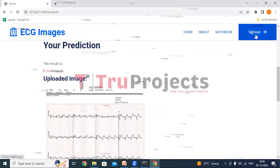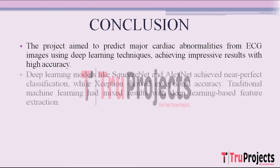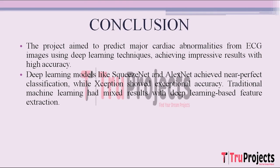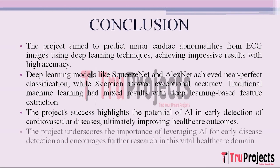Now clicking on the sign out button. The conclusion: The project excelled in predicting major heart issues from ECG images using deep learning. Models like SqueezeNet and LXNet achieved remarkable accuracy. The extension model demonstrated exceptional accuracy, showcasing the potential of transfer learning in ECG image analysis. Traditional machine learning, when combined with deep learning-based feature extraction, showed varied outcomes, emphasizing the power of deep learning. This project underscores AI's significance in early cardiovascular disease detection, promising improved healthcare outcomes, and encourages further exploration and innovation in leveraging AI for early disease detection — a critical domain in healthcare.